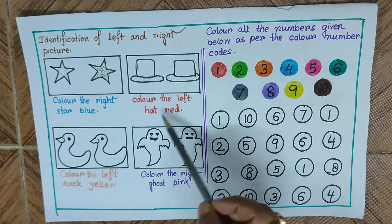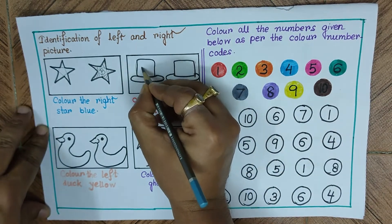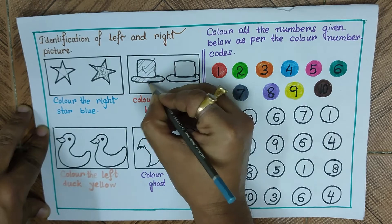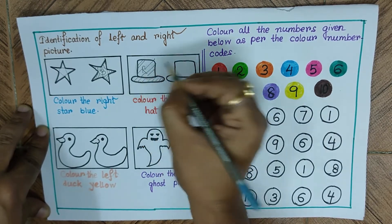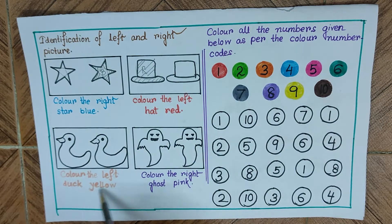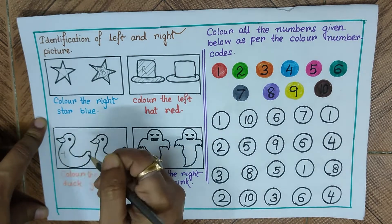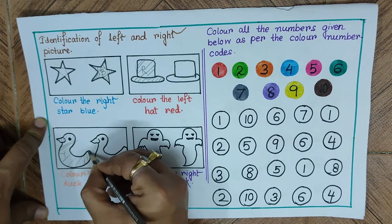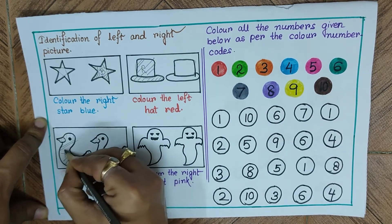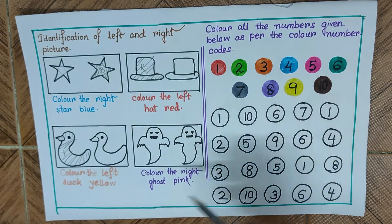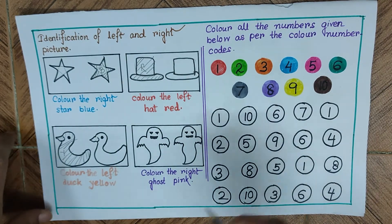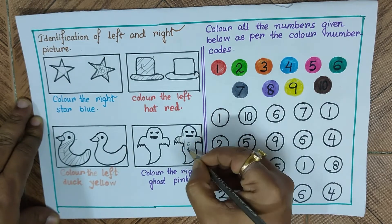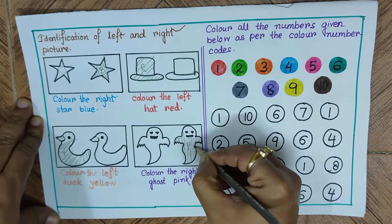Next we have two hats — color the left hat red. The left hat is this one, marked R for red, and I'll put stripes to help you recognize which one to color. Next, color the left duck yellow — the left duck is this one, marked Y for yellow, with stripes to show which to color. Finally, color the right ghost pink — the right ghost is this one, marked P for pink.